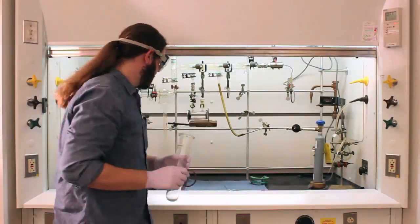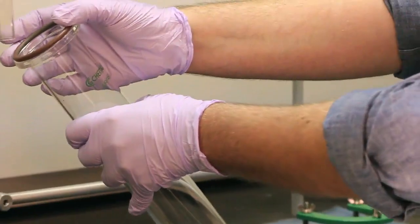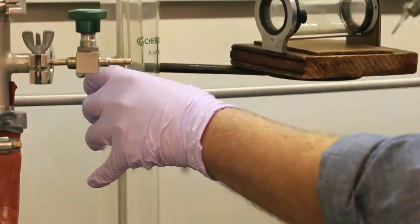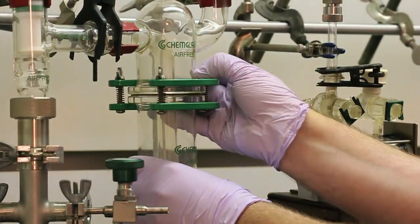Next, install the cold trap. There is a large O-ring that is used to seal the trap. Use the large clamp to keep the trap in position.